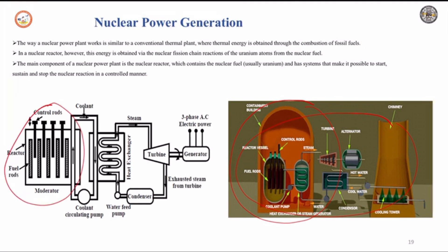Here we have control rods. If the chain reaction becomes too intense, we can control that chain reaction by using the control rods. Depending on the necessity, by using the control rods, we can control the chain reactions so that whatever heat is required can be generated.